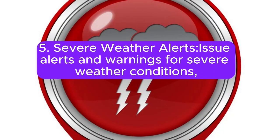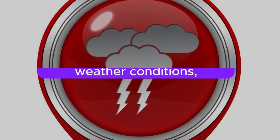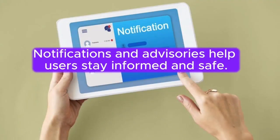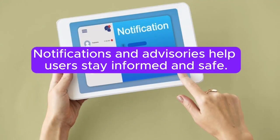5. Severe weather alerts: issue alerts and warnings for severe weather conditions, including thunderstorms, hurricanes, tornadoes, and extreme temperature events. Notifications and advisories help users stay informed and safe.